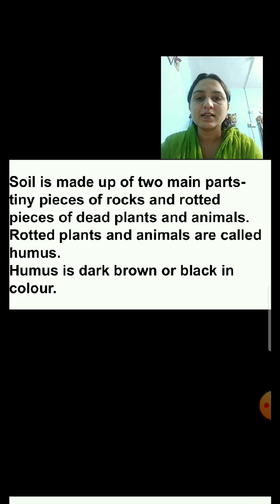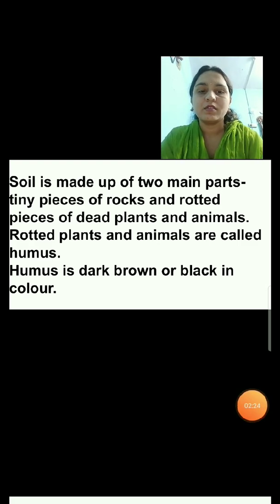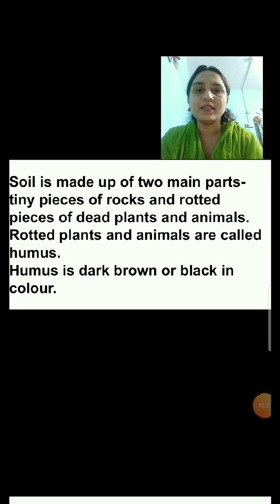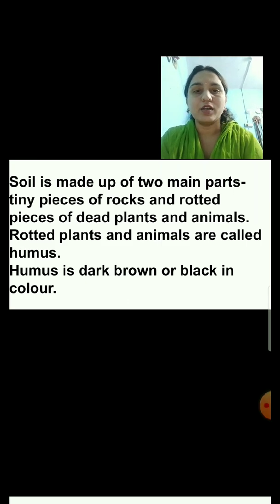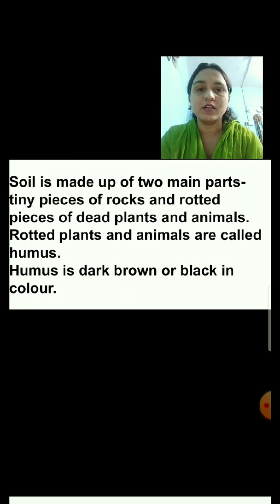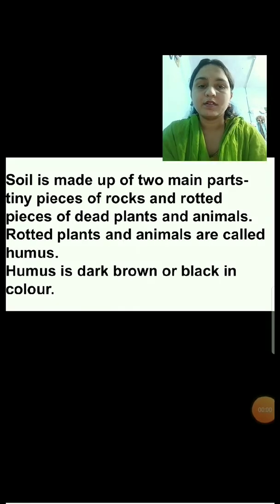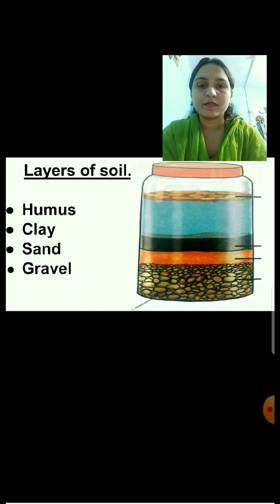Rotted plants and animals are called humus. Humus is dark brown or black in color. Soil collected from different places has different colors. In some places soil is light brown, in some places dark brown, and in some places red in color. They are different because they are made from different rocks. Now let's study about the layers of soil.